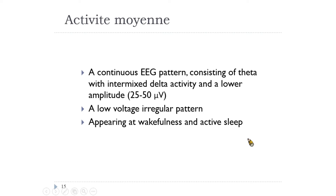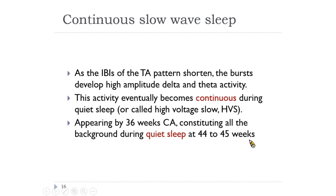Activité moyenne is a continuous EEG pattern of theta with intermixed delta activity and a lower amplitude of 25 to 50 µV — a low-voltage irregular pattern appearing at wakefulness and active sleep. As the IBIs of the TA pattern shorten, the bursts develop high-amplitude delta and theta activity. This activity eventually becomes continuous during quiet sleep, called high-voltage slow (HVS), appearing by 36 weeks and constituting the background during quiet sleep at 34 to 35 weeks.